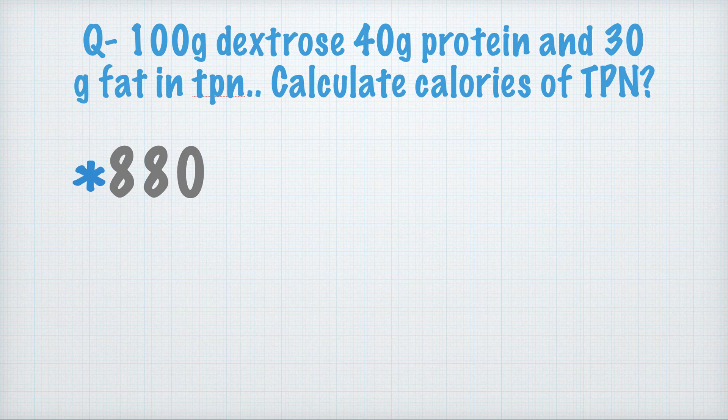Calculate the calories of TPN: 100 gram dextrose, 40 gram protein, and 30 gram fat in TPN. The correct answer for the total calories is 880.